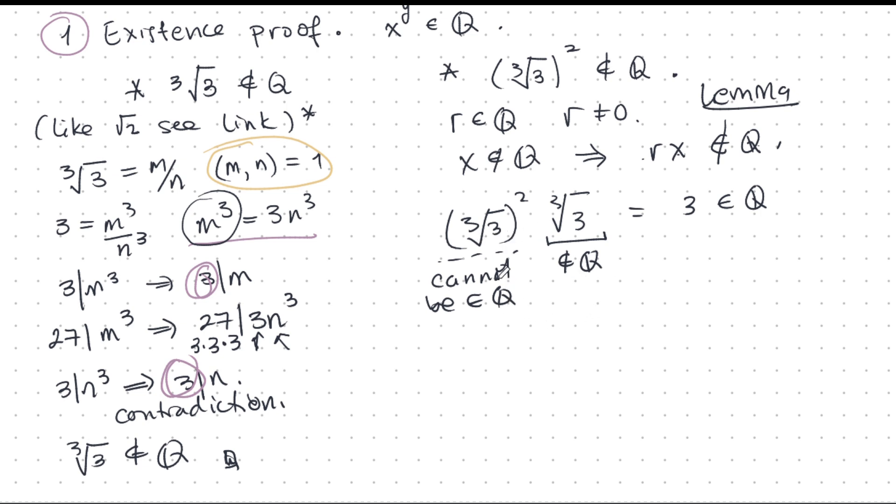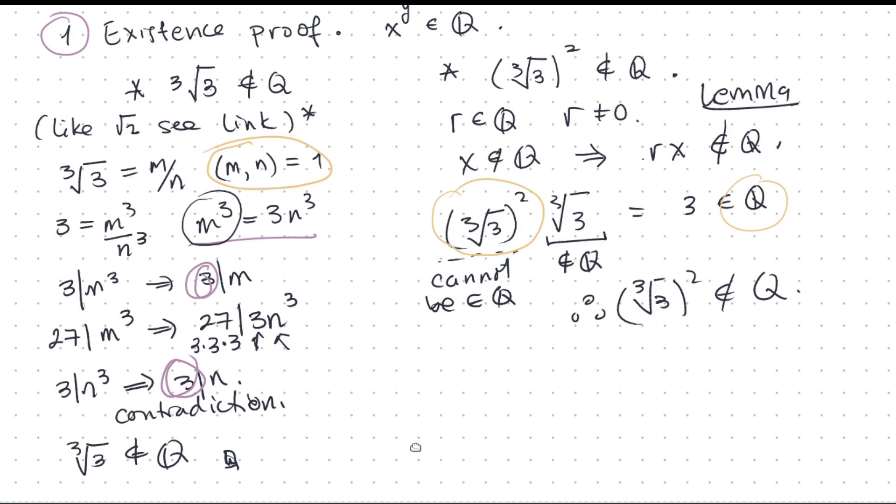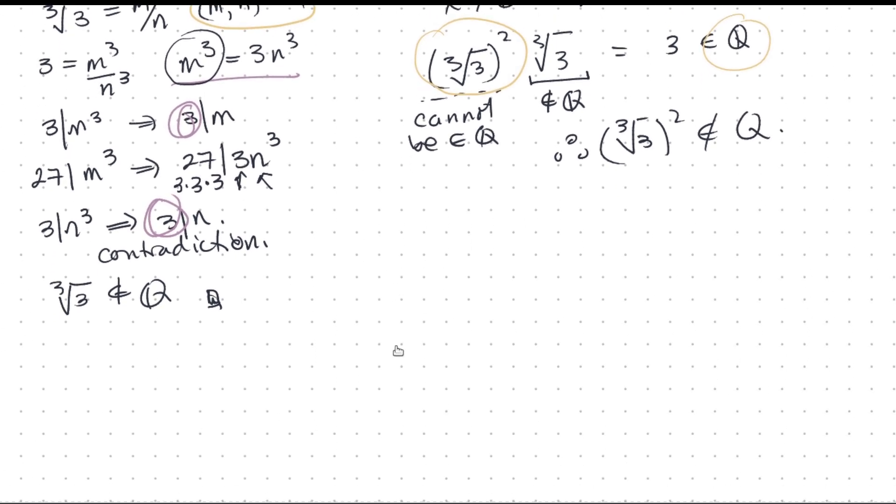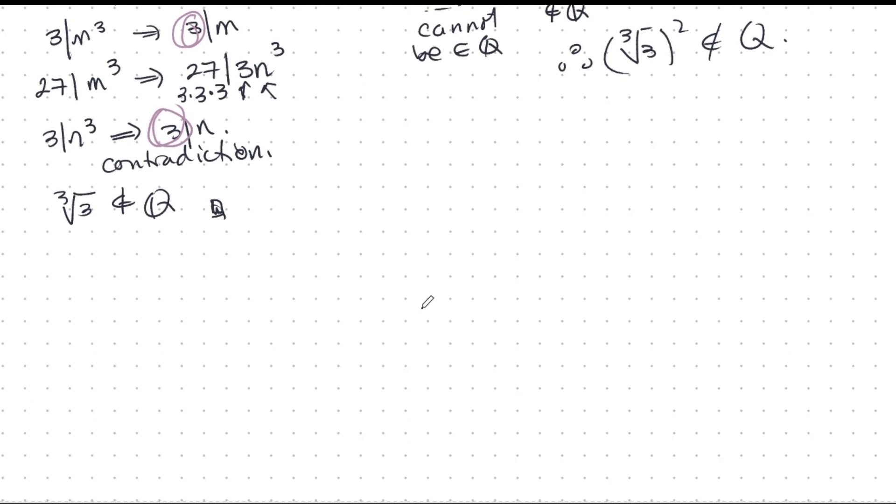So we have a contradiction here. If we assume that this here is rational, then we get a contradiction with this. Therefore it must be irrational. So cube root of 3 squared is not in Q. Great. Now I can use these facts to construct some very interesting proof.